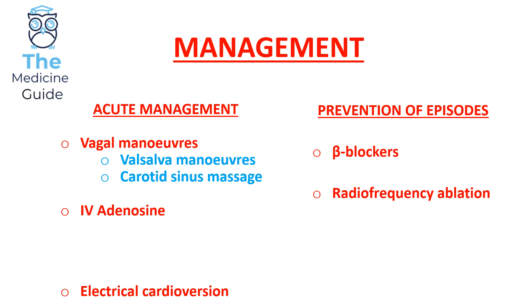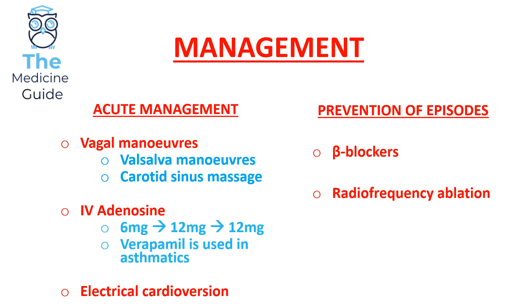If vagal manoeuvres have been unsuccessful, we would consider IV adenosine. Initially a 6 mg dose of IV adenosine is used; if unsuccessful, 12 mg is given, and if that's also unsuccessful, another 12 mg dose is used. When using a 12 mg dose of IV adenosine, it's important to ensure the patient is receiving continuous ECG monitoring.